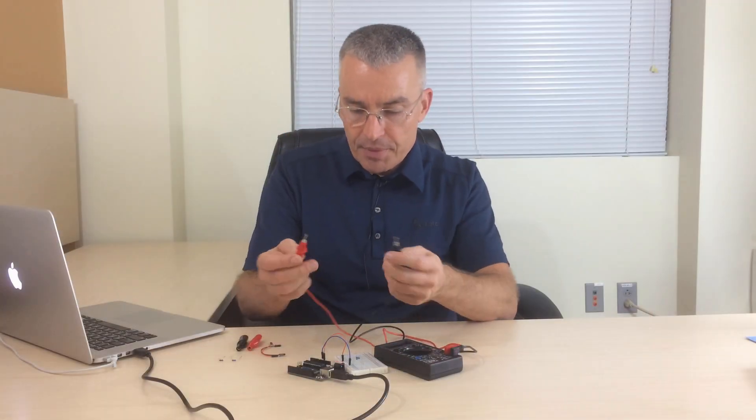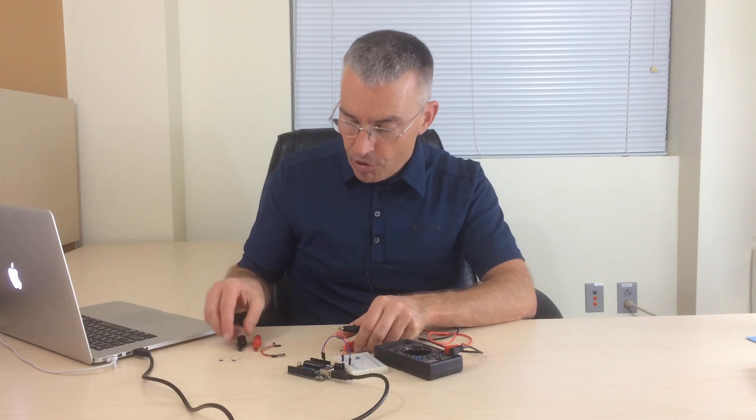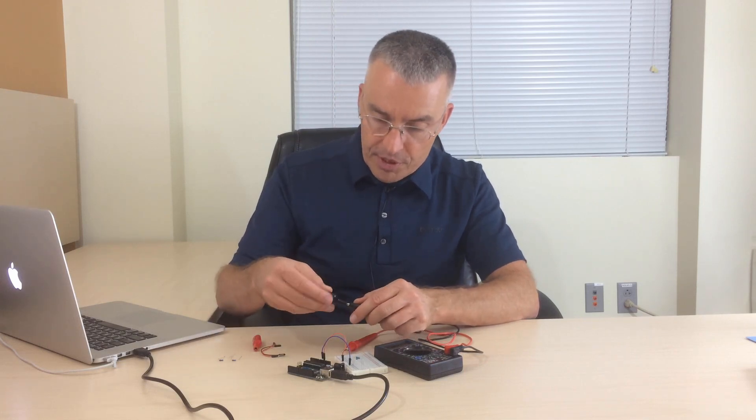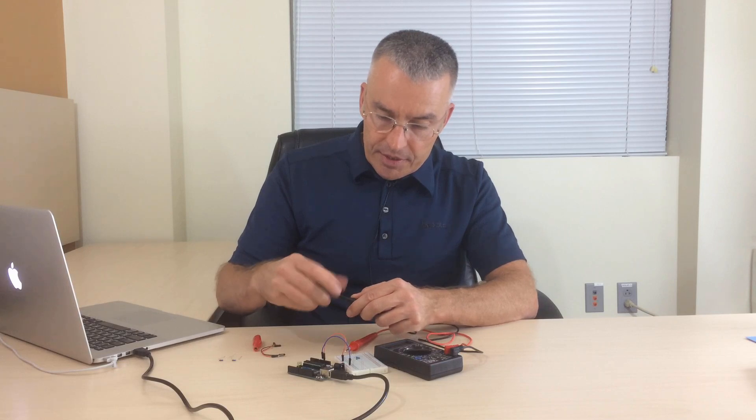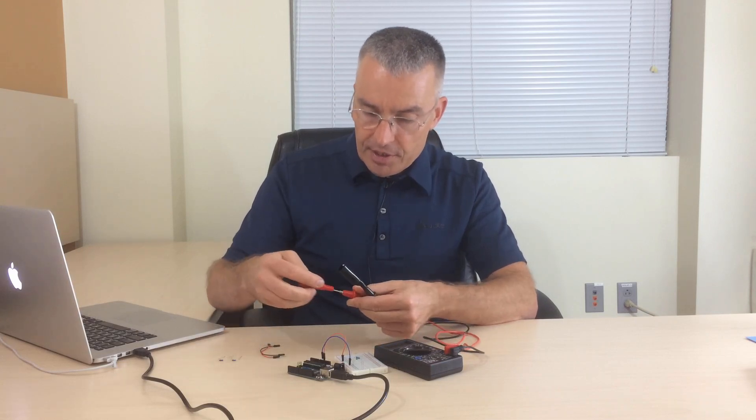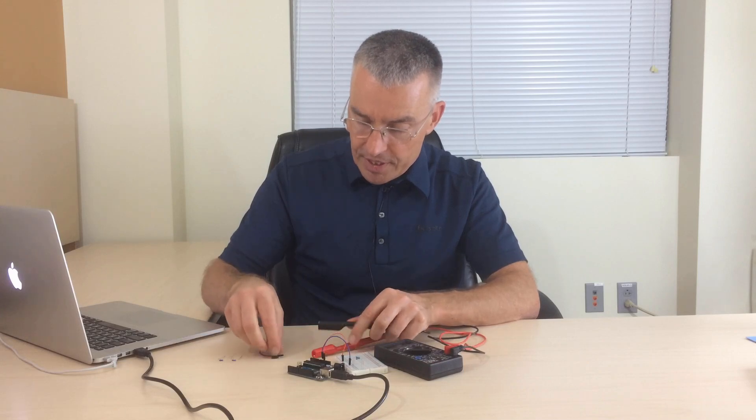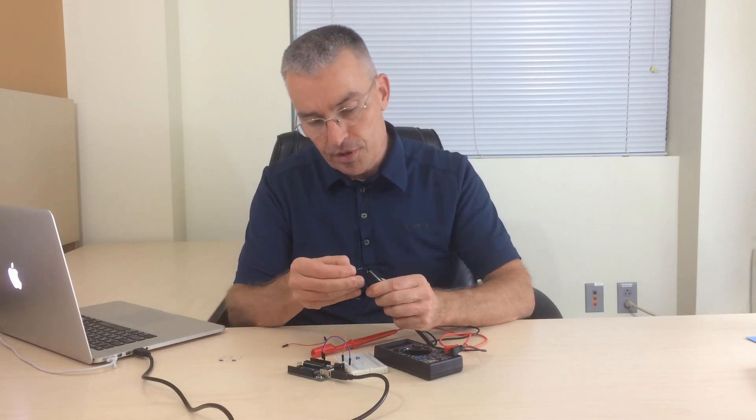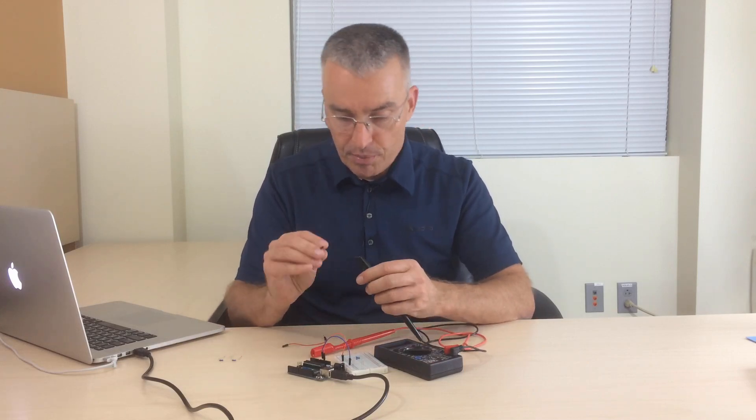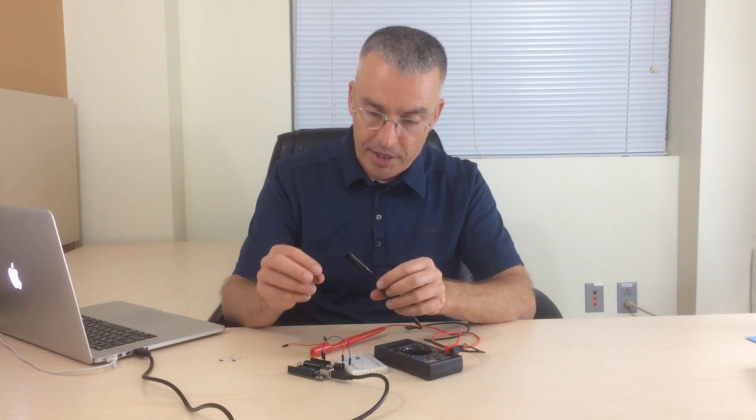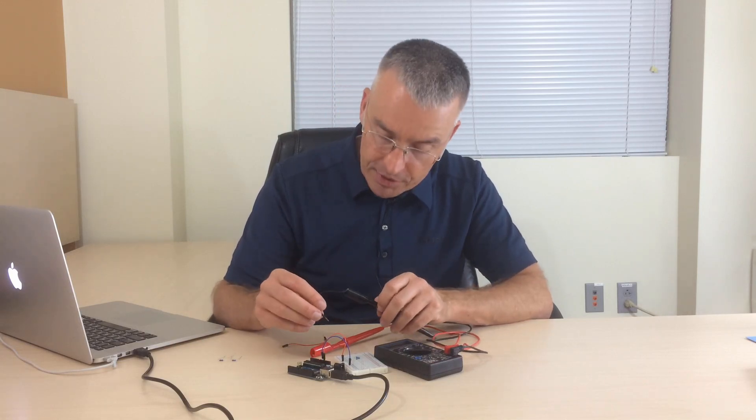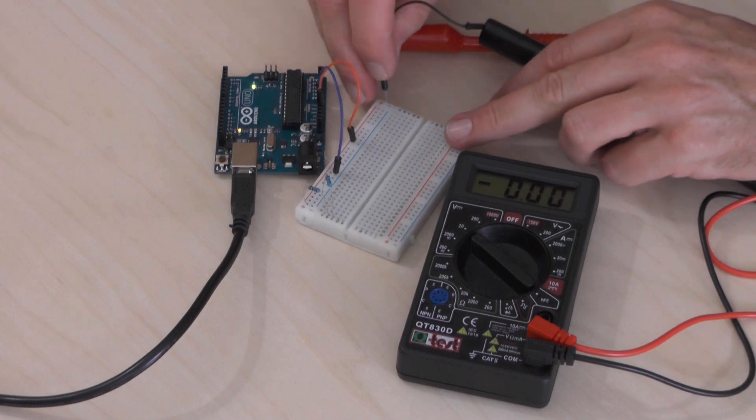Now there is luckily a better way to do this than holding these probes against some flimsy leads. We can screw on these alligator clips that come with this multimeter and then we extend the alligator clips with those breadboard jumper wires. So I connected the black one to the black probe. It's always good to keep these colors consistent then it's much less likely to make a mistake.